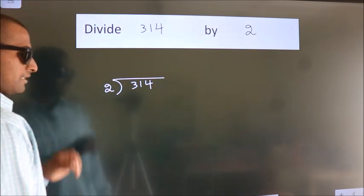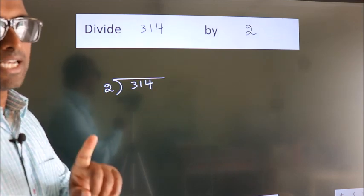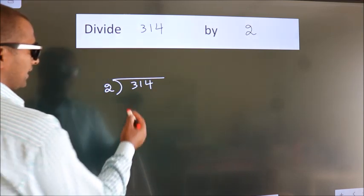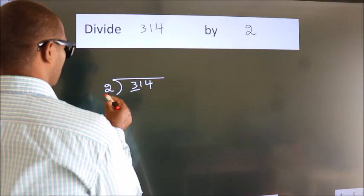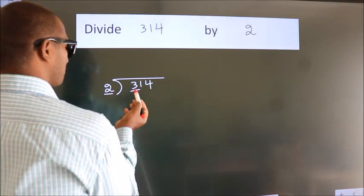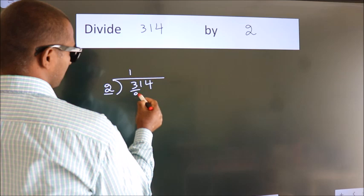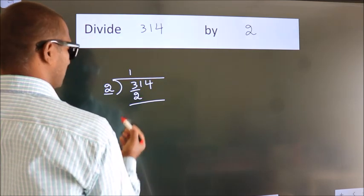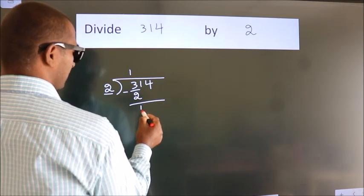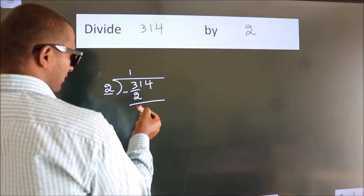This is step 1. Next, here we have 3, here 2. A number close to 3 in the 2 table is 2 1s 2. Now, we subtract. We get 1.